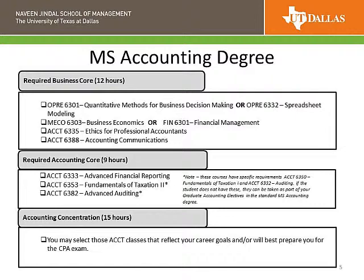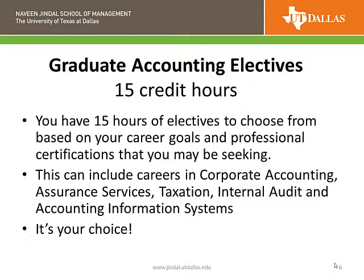Finally, you can choose an accounting concentration or electives of 15 hours. In the standard degree you have 15 credit hours — five three-hour courses — and you can choose these based on your career goals and any certifications you might be pursuing. These can include careers in corporate accounting, assurance, taxes, internal audit, or information systems. The nice thing is, it's your choice.